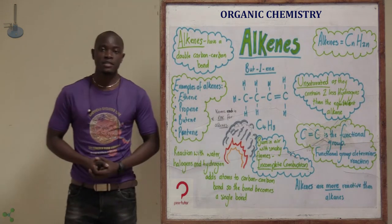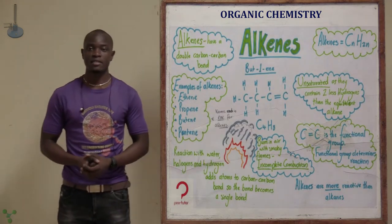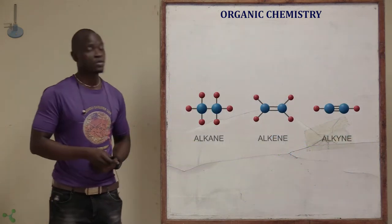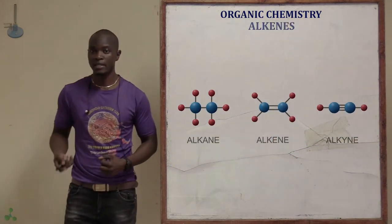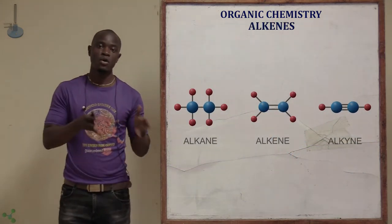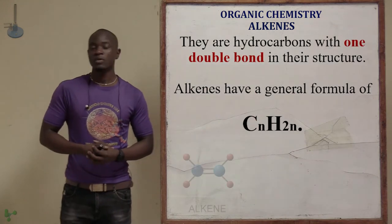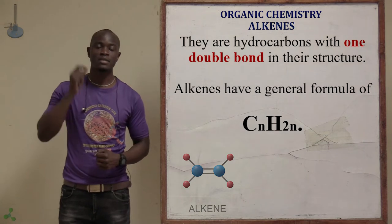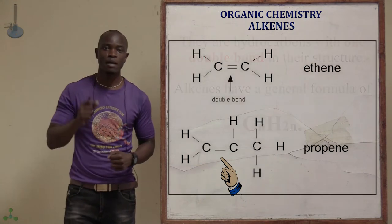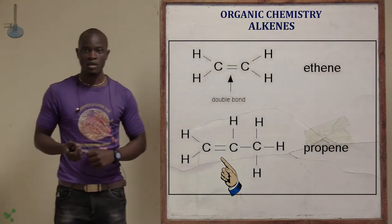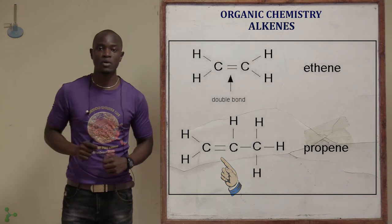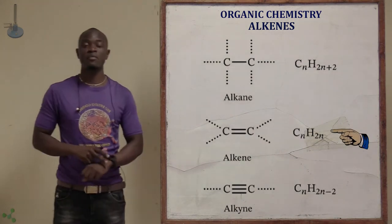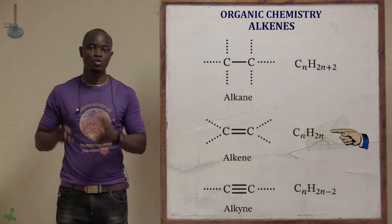Let's now look at alkenes as the next hydrocarbon family. These are hydrocarbons with at least one double bond in their structure. They have at least one double bond, and their general formula is CnH2n.